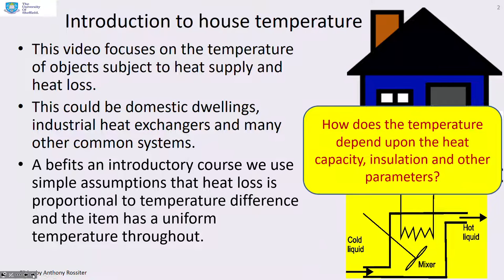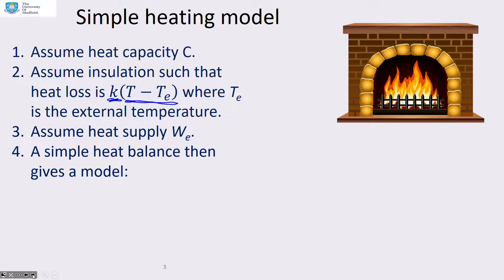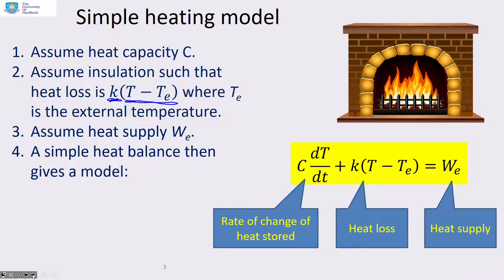We're going to ask questions about how the temperature depends upon the heat capacity, the insulation, and other parameters. Looking at a simple heating model, we'll assume a heat capacity for the whole object of C in joules per degree. We assume insulation such that heat loss is given by k times the temperature difference between the object and external temperature. With heat supply W, a simple heat balance gives: C times the rate of change of temperature plus k times the temperature difference equals the heat supply.